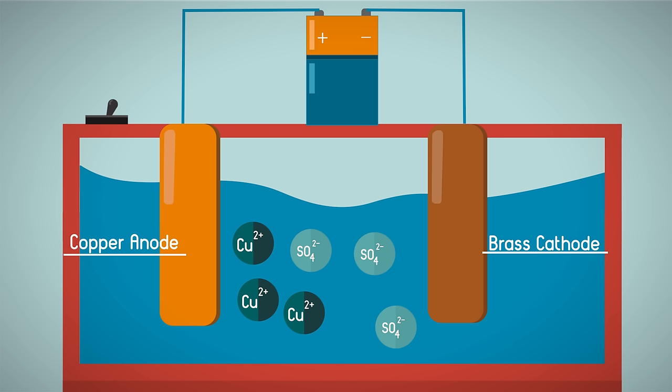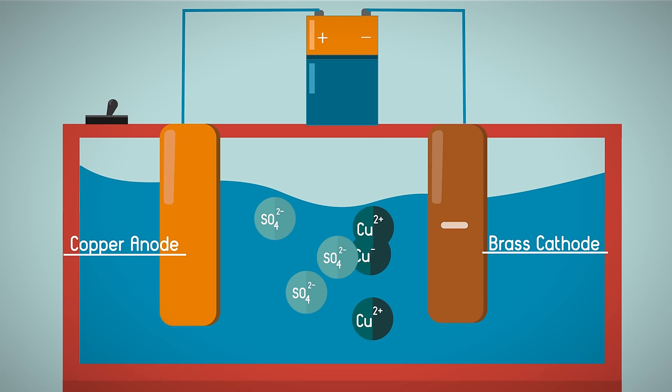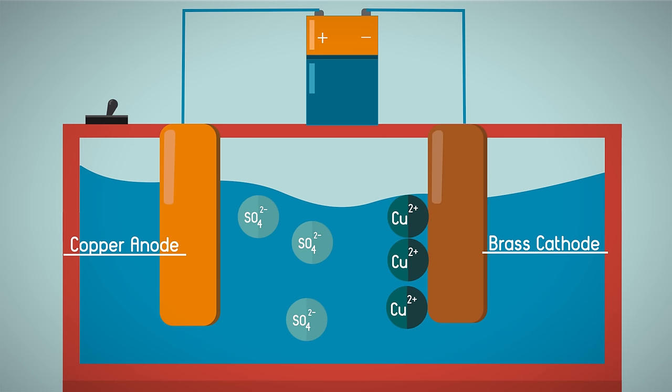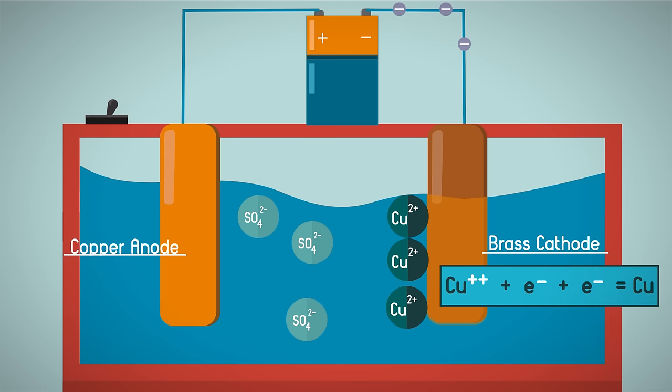The copper ions are positively charged and so are attracted to the negatively charged brass cathode. The copper ions deposit onto the brass, producing the thin copper plate. The positively charged copper ions gain electrons, which is known as reduction.